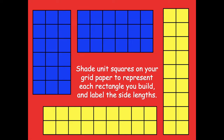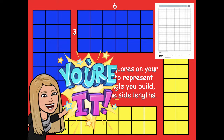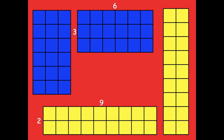Now shade unit squares on your grid paper to represent each rectangle you built and label the side lengths on your lesson template. If you didn't have square tiles before, you would have just skipped to this drawing part. Labeling would look like '3 by 6' or '2 by 9'. Pause the video, shade and label your rectangles on your lesson template, then click play when you're ready.